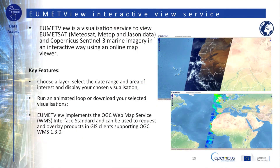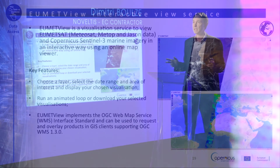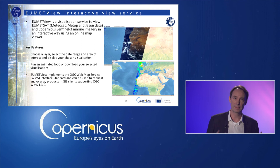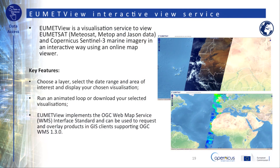Finally, you can use EUMETView, a visualization service to view EUMETCast data such as Meteosat, Metop, Jason, and Copernicus Sentinel-3 Marine Imagery. Everything can be seen in an interactive way using an online map viewer. With EUMETView, you can choose a layer, select the date range and area of interest, and display your chosen visualization. You can run an animated loop or download your selected visualizations. Note that EUMETView implements the OGC Web Map Service (WMS) Interface Standard and can be used to request and overlay products in GIS clients supporting OGC WMS 1.3.0.